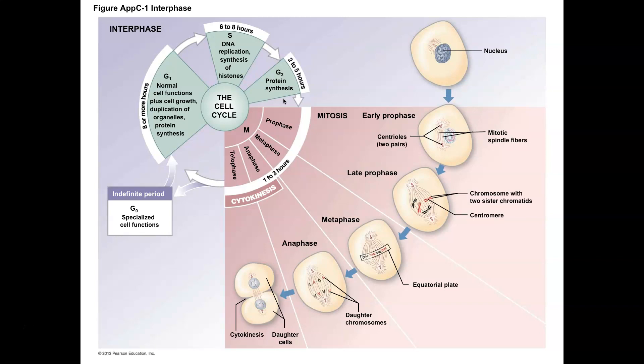Now, if a cell is not going to go through mitosis — for example, a particular neuronal cell or cardiac muscle cells that no longer go through mitosis — then they would basically live out their life in that G1 phase of the cell cycle. So what drives this process of the cell cycle? What drives mitosis is proteins called cyclins.